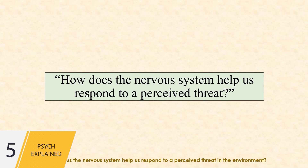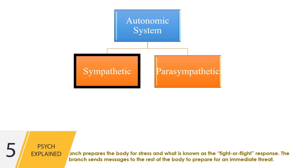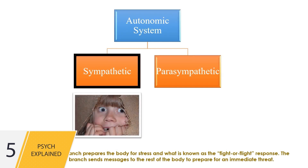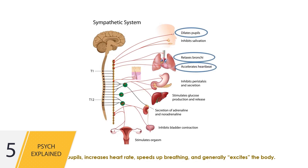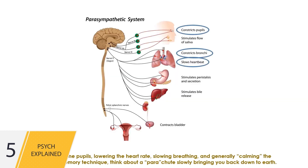How does the nervous system help us respond to a perceived threat in the environment? The autonomic system is further divided into two branches: the sympathetic branch and the parasympathetic branch. The sympathetic branch prepares the body for stress in what is known as the fight-or-flight response, sending messages to prepare for an immediate threat — it dilates the pupils, increases heart rate, speeds up breathing, and generally excites the body. After the threat is perceived to be gone, the parasympathetic branch returns the body to homeostasis, contracting the pupils, lowering the heart rate, slowing breathing, and generally calming the body.